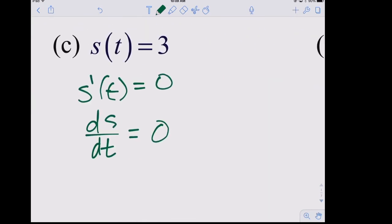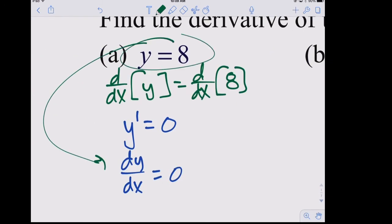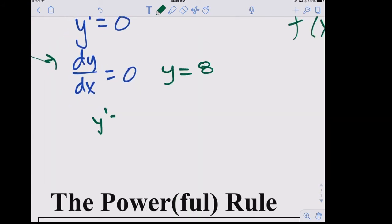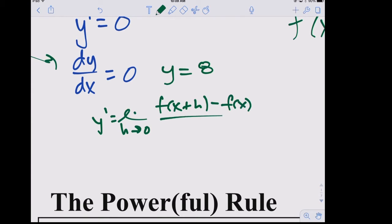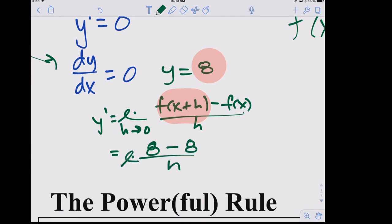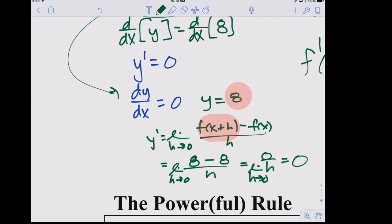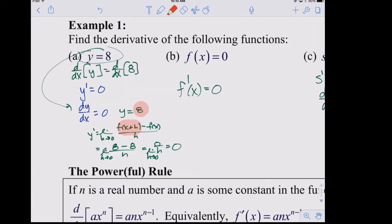Let's verify the constant rule using the limit definition for y = 8. Then y prime equals the limit as h → 0 of [f(x+h) − f(x)] / h. Plugging in x+h for x into 8 — there's no variable, so it stays 8. We get (8 − 8)/h = 0/h. The limit as h → 0 is zero. We've now proved it with the definition.